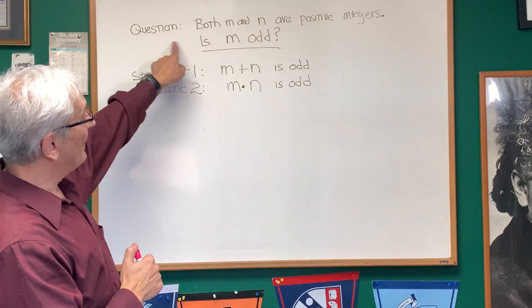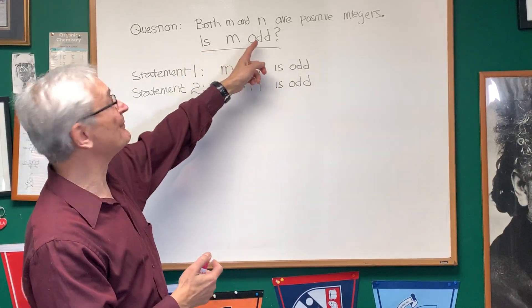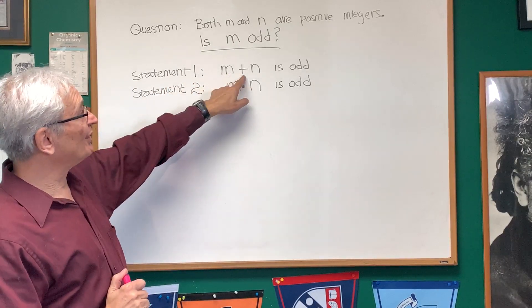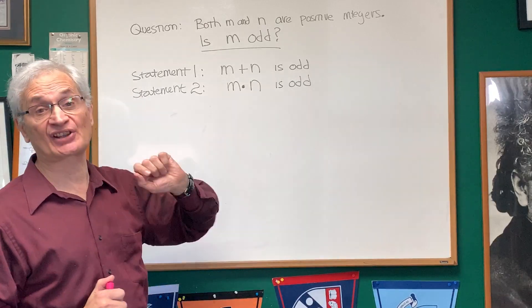Here's the question. Both M and N are positive integers. The question is, is M odd? Statement one: M plus N is odd. Statement two: M times N is odd.